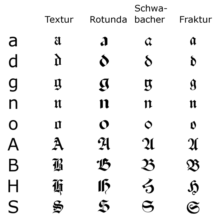Fraktur is a calligraphic hand of the Latin alphabet and any of several blackletter typefaces derived from this hand. The blackletter lines are broken up — their forms contain many angles when compared to the smooth curves of the Antiqua typefaces modeled after antique Roman square capitals and Carolingian minuscule.